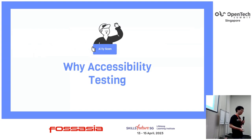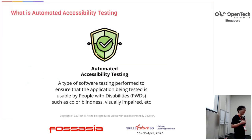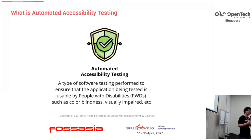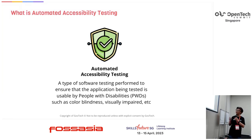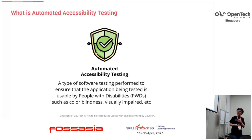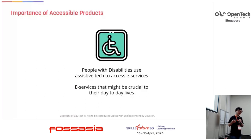So why accessibility testing? Accessibility testing is about making sure your websites and mobile apps are friendly towards persons with disabilities. One form of this is automated accessibility testing, which helps you uncover and ensure that applications you develop are accessible. Common types of disabilities include color blindness and vision impairment. Vision-impaired users rely on tools like screen readers and keyboards, and if you don't test for these people, your services are likely not accessible to them.